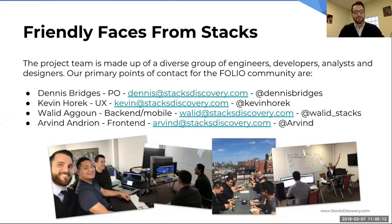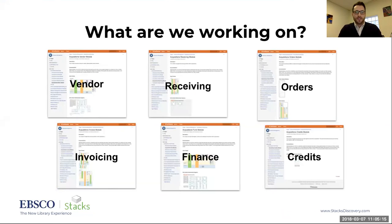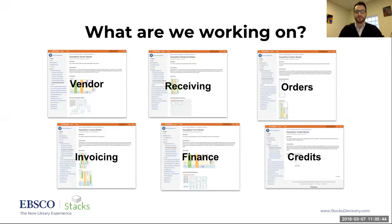Here's an overview of the work we're doing in acquisitions. A significant portion of what we consider acquisitions breaks down into six different modules: vendors, receiving, orders, invoicing, finance, and credits. There are pages on the wiki under the resource management group within the acquisitions small group dedicated to each of these modules, where you can see our entity reference diagrams showing information about what we have in the databases for each module.